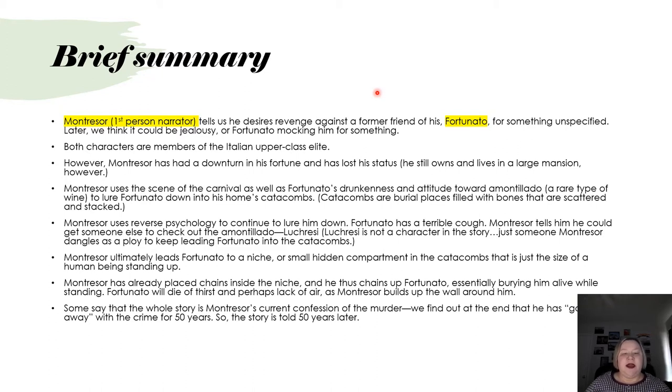Later, we might think it could be jealousy or that Fortunato is mocking him for something. But we really don't know. He kills him for an insult. Both characters are members of the Italian elite upper class. However, Montresor has had a downturn in his fortune and has lost his status, although he still owns and lives in a large mansion, which we know is the setting of the story.